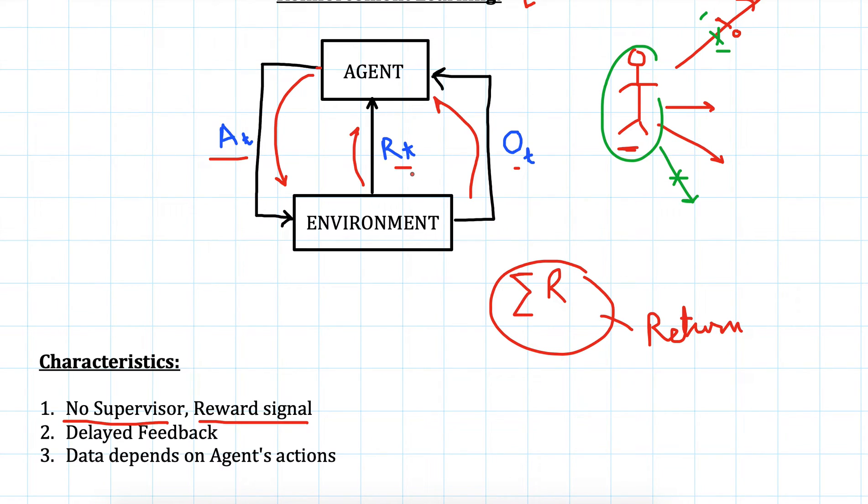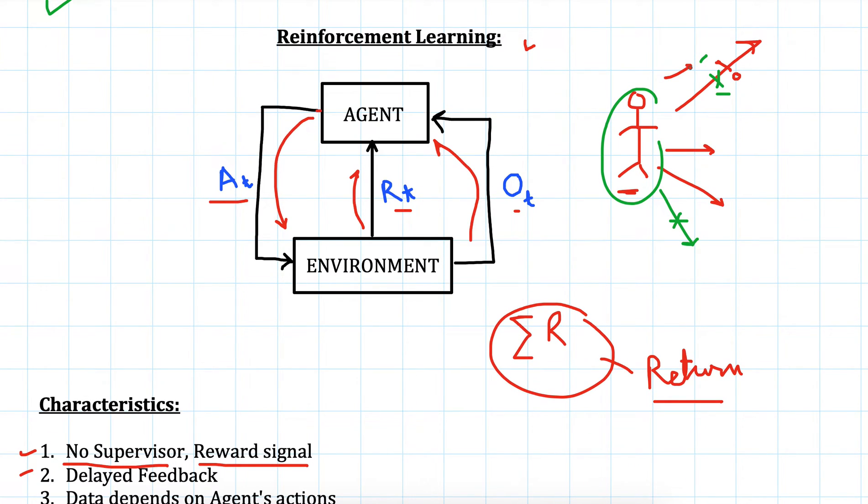The agent receives reward either after every step or every action it takes, or sometimes the reward is defined to come after a very long period of time. But the return would be the cumulative reward that the agent accumulates over a period of time. In this case the feedback is delayed, so it's not immediate. Data depends on the agent's action. Like if the robot had moved in this direction it will receive a very different set of data compared to if it had moved in this direction.